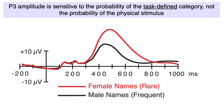Here's what the results of the Koudis study looked like. These aren't the real data — the original paper didn't provide a figure overlaying the targets and the standards — but this is approximately what they found. You can see that the rare female names generated a larger P3 than the frequent male names, even though any individual male or female name was presented only once.